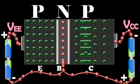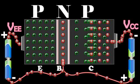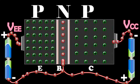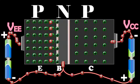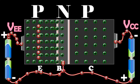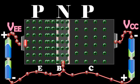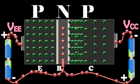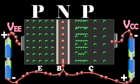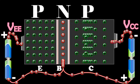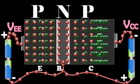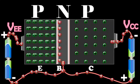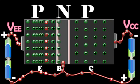This number is very small. The loss of the total number of electrons per second is made up by the flow of an equal number of electrons from the negative terminal of VEE into the base. The flow of these electrons constitutes the base current IB.